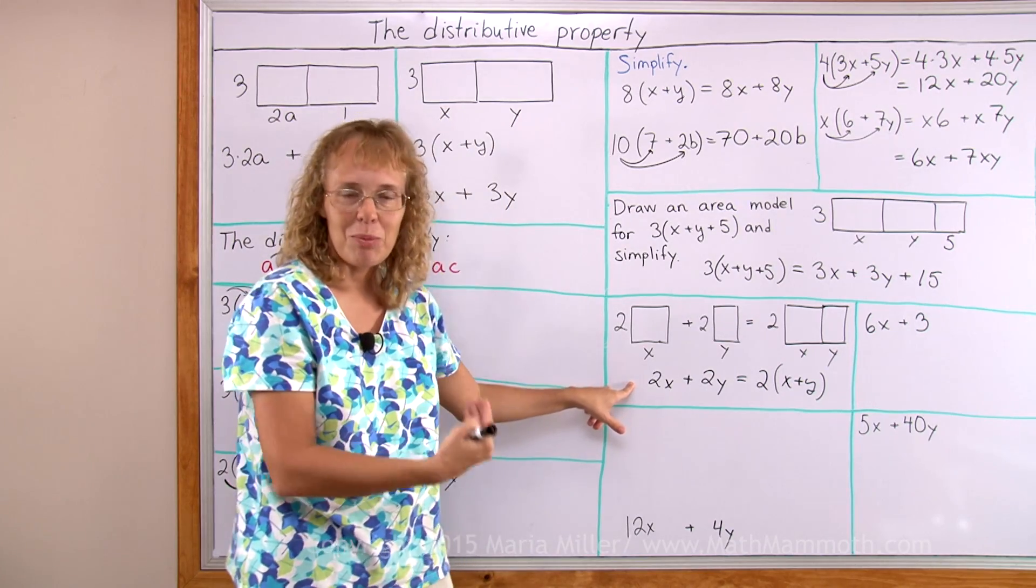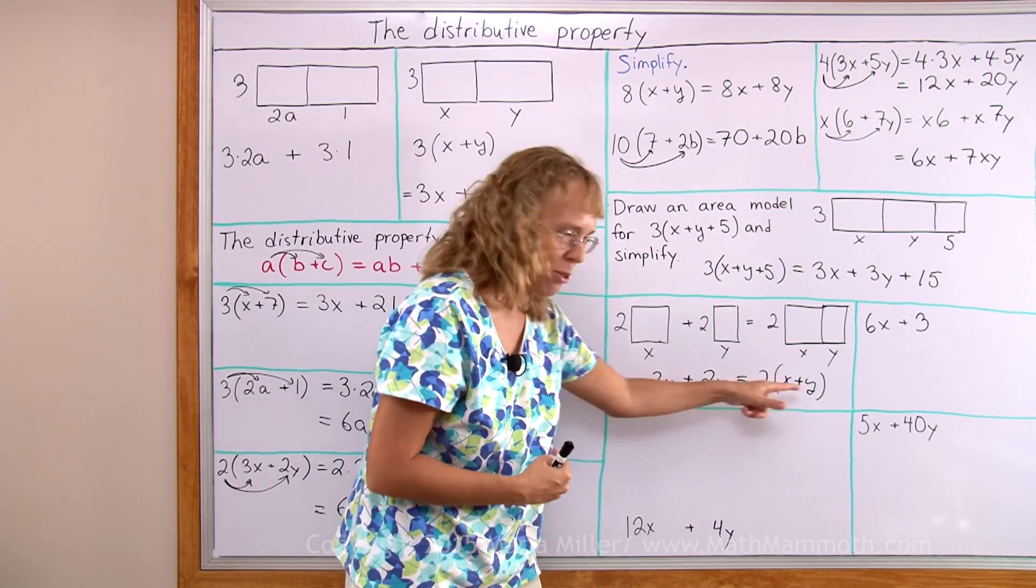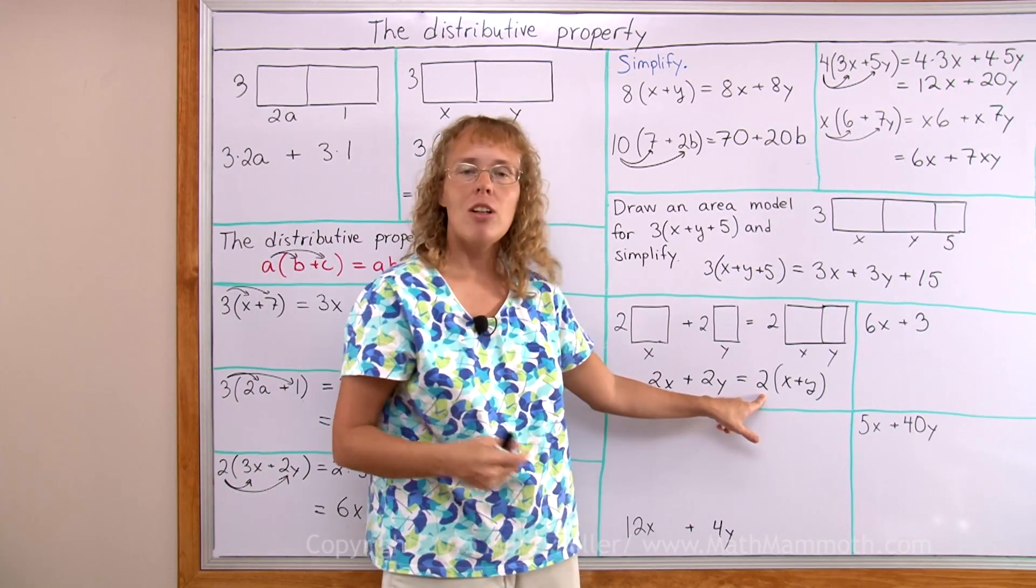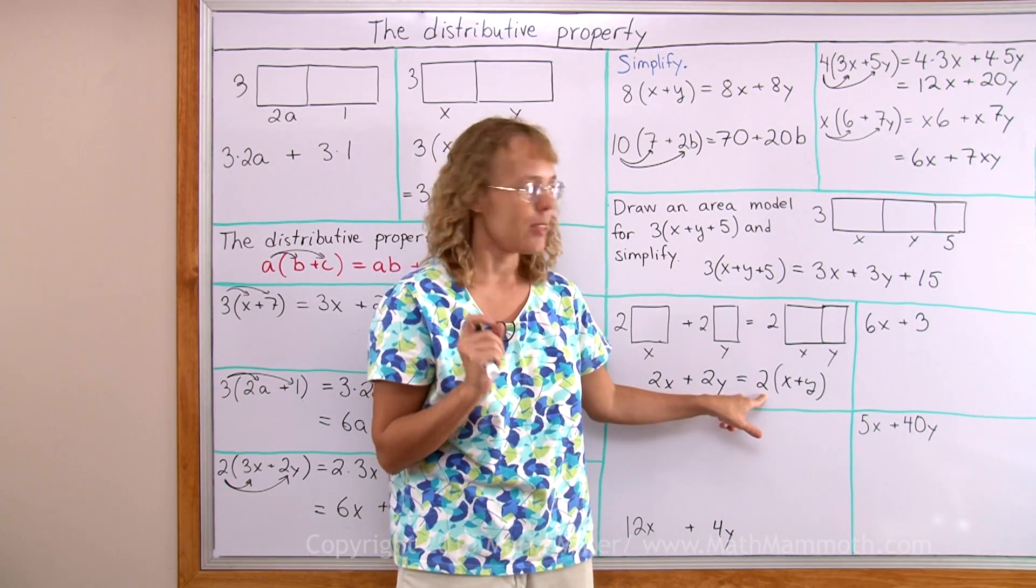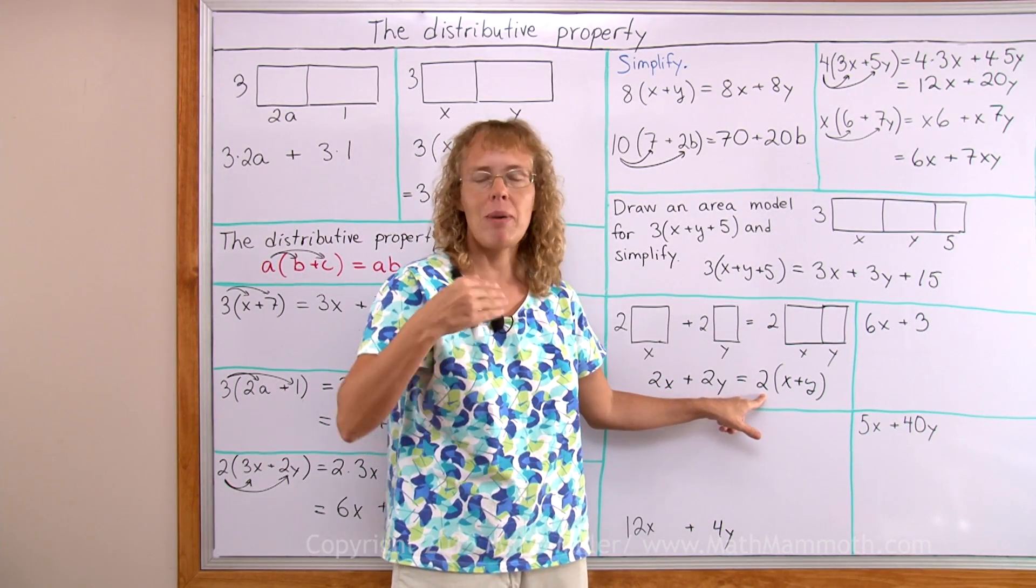This is now the distributive property. I used it the other way. This number two here is called the common factor. Factor, because we multiply by it.